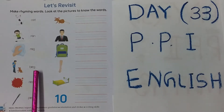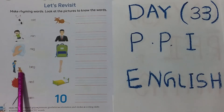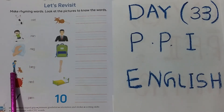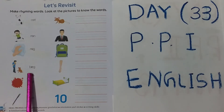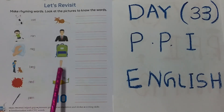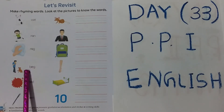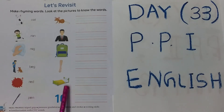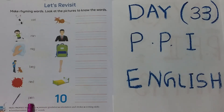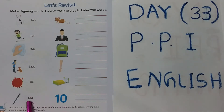Beg — the dog is begging the man. Beg, Leg, Red, Bed. Now see next: Pen, Ten. Pen, Ten.